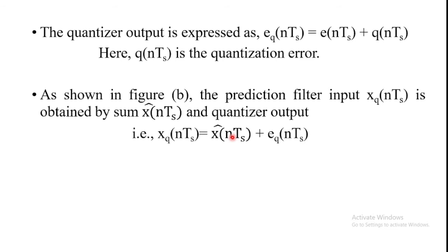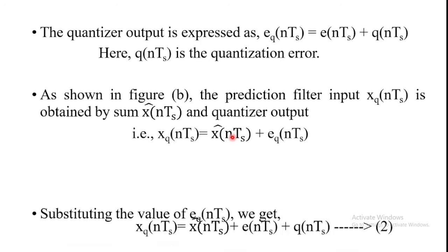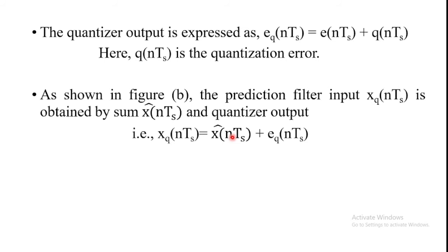From the block diagram of the transmitter, XQ(nTs) is the input to the prediction filter. This input XQ(nTs) is obtained by summing X̂(nTs) and the quantizer output EQ(nTs). So, XQ(nTs) = X̂(nTs) + EQ(nTs). And equation 1 is the prediction error: E(nTs) = X(nTs) − X̂(nTs).